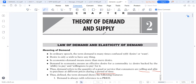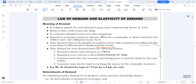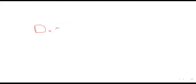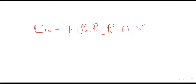The determinants of demand formulate what we call a demand function, which has dependent variables and independent variables. There are a number of factors that affect demand: the price of a complement, the price of a substitute, advertising, income, taste, technology, and other factors.